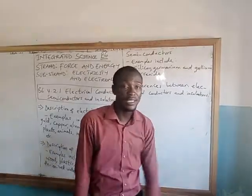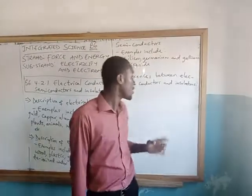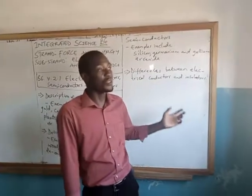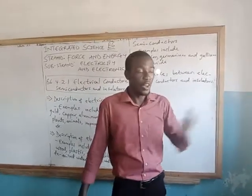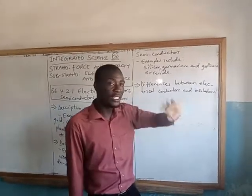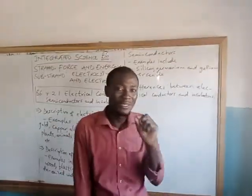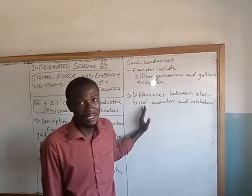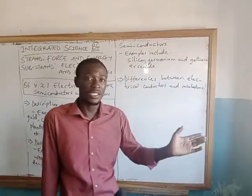There are differences between conductors and insulators. For electrical conductors, they have free electrons — that is, the free electric charge carriers. Because of that, they are able to conduct electricity and move electric charges from one place to another. Also, conductors have little or negligible electrical resistance, because of which there is nothing strong enough to oppose the electric charges as they flow.